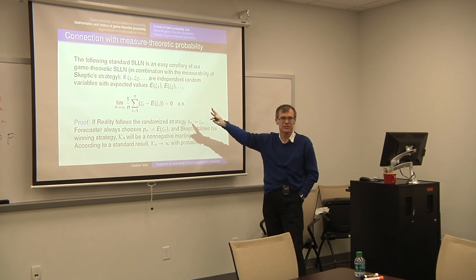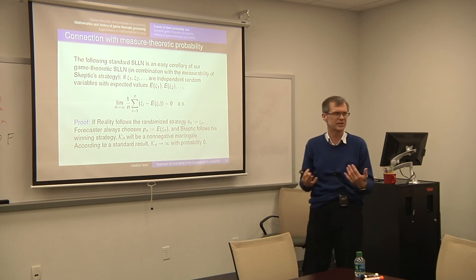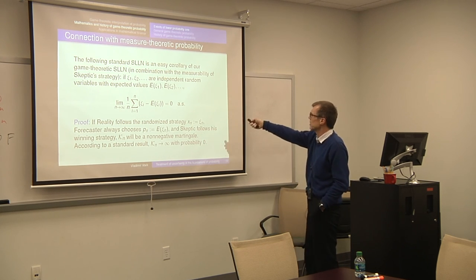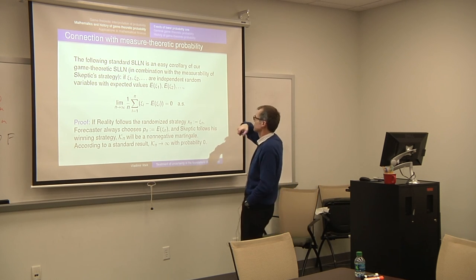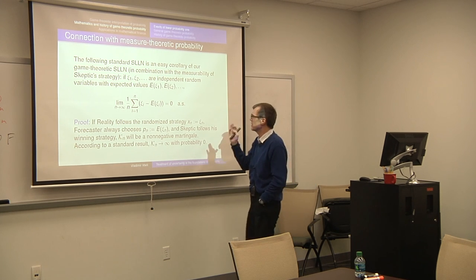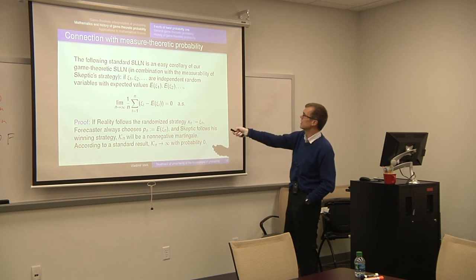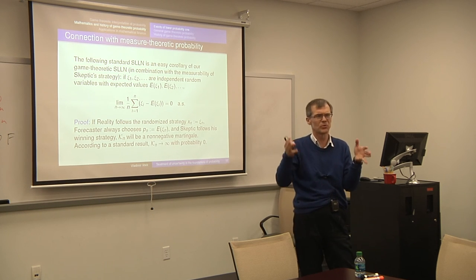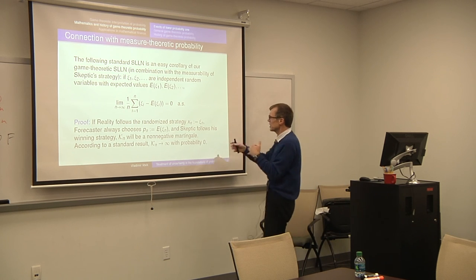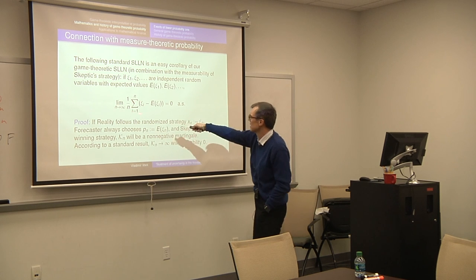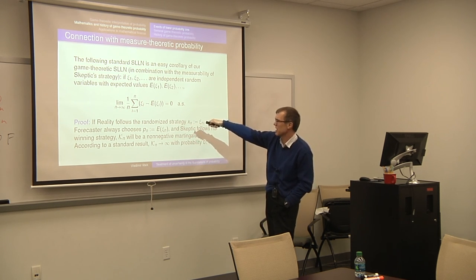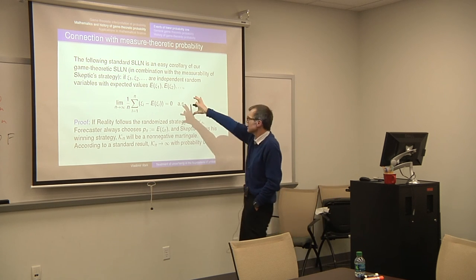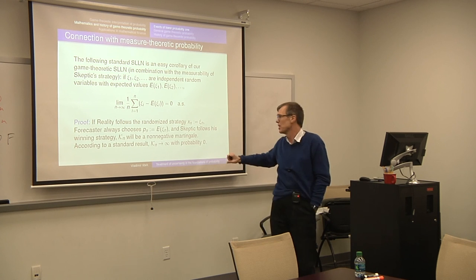This connection between game theoretic and measure theoretic probability was important just to prove strong results from the mathematical point of view. Here is one simple measure theoretic strong law of large numbers: Xi1, Xi2, and so on are independent random variables with some expected values, bounded between minus one and one. Then the limit of this average deviation of the random variable from its expected value will be zero — almost surely. Now in game theoretic probability we don't have this qualification 'almost surely.' That qualification is a corollary of the game theoretic result.